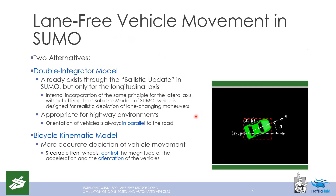For lane-free vehicle movement within SUMO, we provide two alternatives. The first is the double integrator model, which already exists within SUMO through the ballistic update option, considering constant acceleration between discrete steps — but only for the longitudinal axis. Our extension applies the same principle to the lateral axis as well. We did not utilize SUMO's sublane model because it is designed to be combined with lane-changing maneuvers. The double integrator model is appropriate for highway environments and high-speed vehicles, under the assumption that vehicle orientation is always parallel to the road.